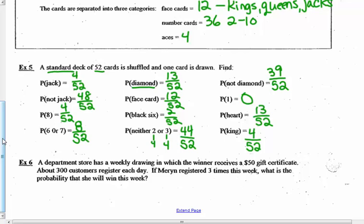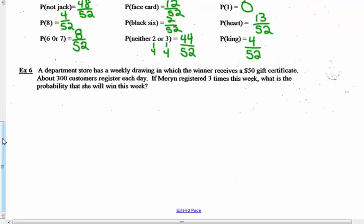A department store has a weekly drawing in which the winner receives a $50 gift certificate. About 300 customers register each day. So each day, 300 people. It's a weekly drawing. If Mirren registered 3 times this week, what is the probability that she's going to win this week? So the total number of customers is about, it says about 300, is about 2,100 customers total in the week. Mirren registers 3 times. So her probability of being successful, 3 chances out of the total 2,100 registrations that people have. So she doesn't have a very high chance of being chosen. 3 out of 2,100. Which is a lot better than trying to, for instance, beat the New York State lottery or win at that.